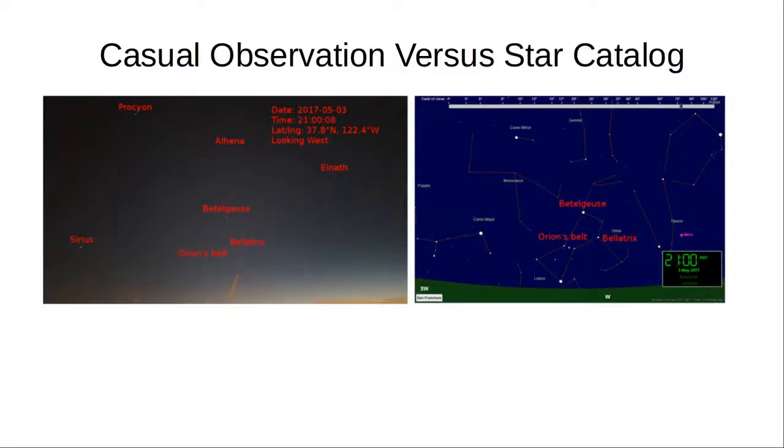To confirm the accuracy of the star catalog by direct observation, just go outside and look at the stars. See if they match what the star catalog says. On the left, I have a photograph that I took about a month ago, showing several stars that are visible in my location. And on the right is the corresponding star catalog image. As you can see, they line up very well.